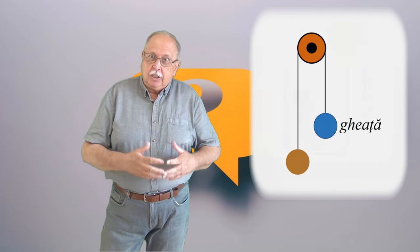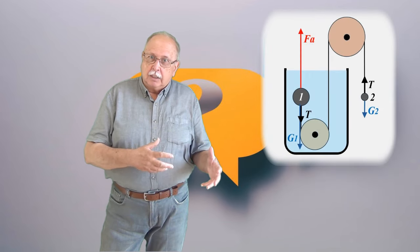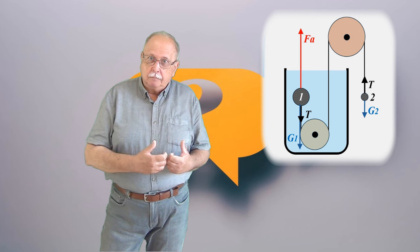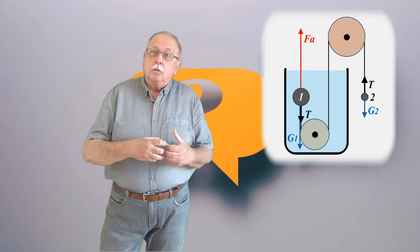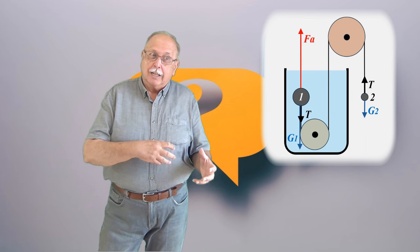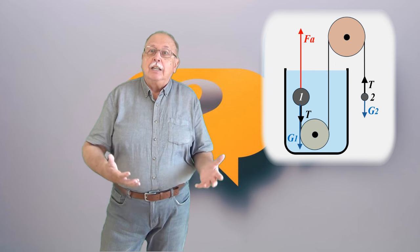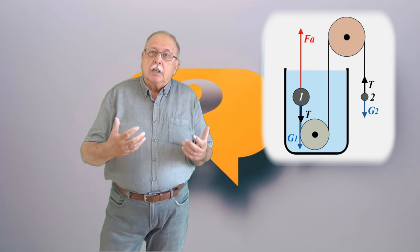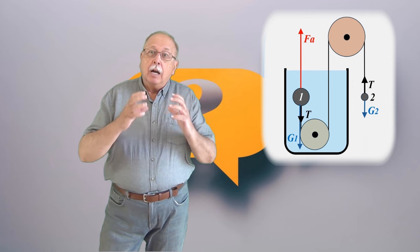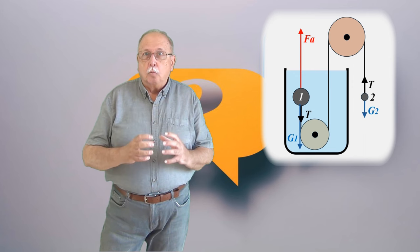Așa că și în cazul în care cele două bile din întrebarea noastră urcă în vasul cu apă, coboară un volum de apă egal cu volumul bilei 1, iar energia necesară ridicării ambelor bile provine din energia potențială gravitațională a apei care coboară.